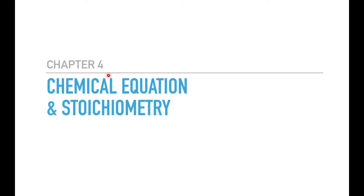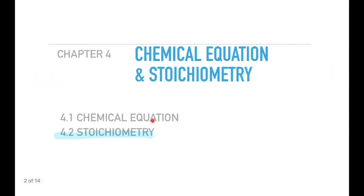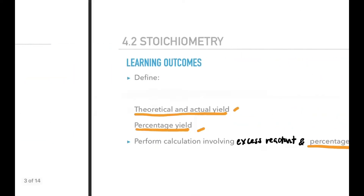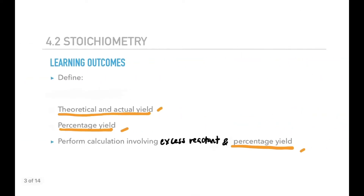Hi guys, welcome back to the channel. Today we're still in Chapter 4, Chemical Equation and Stoichiometry. We're going to focus on 4.2 Stoichiometry, Part 3 — the last part — covering percentage yield, theoretical and actual yield, and calculations involving excess reactant and percentage yield.